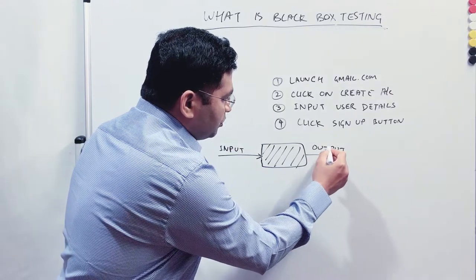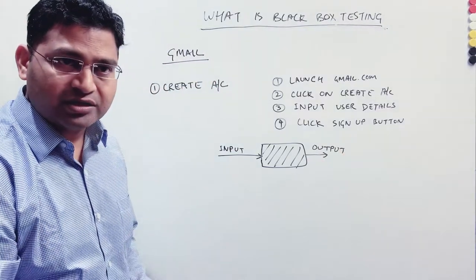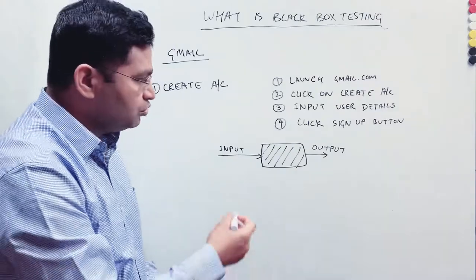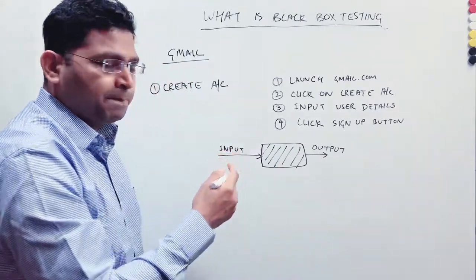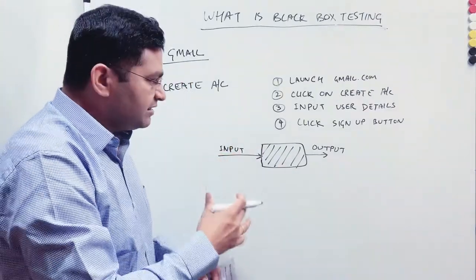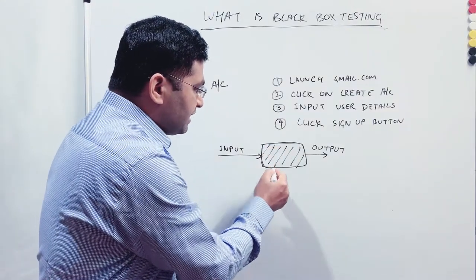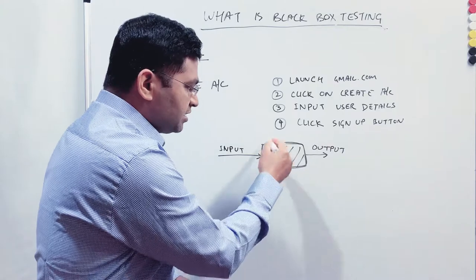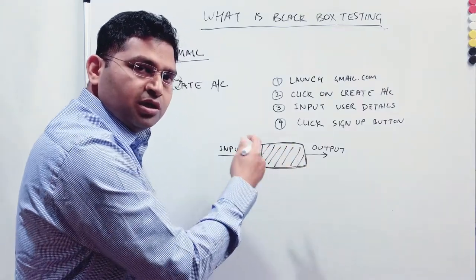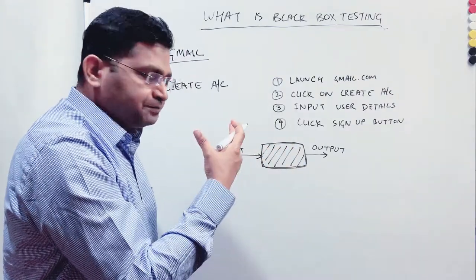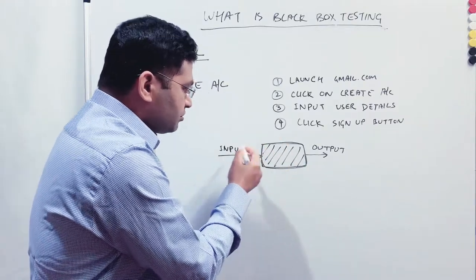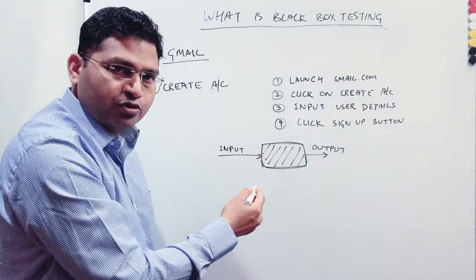And if output is what is expected, then I'll say the test has passed. So usually this is the key thing to remember about the black box: you don't know what exactly is the implementation within this particular box. As a tester, you're just verifying the output based on different set of inputs that you'll provide.